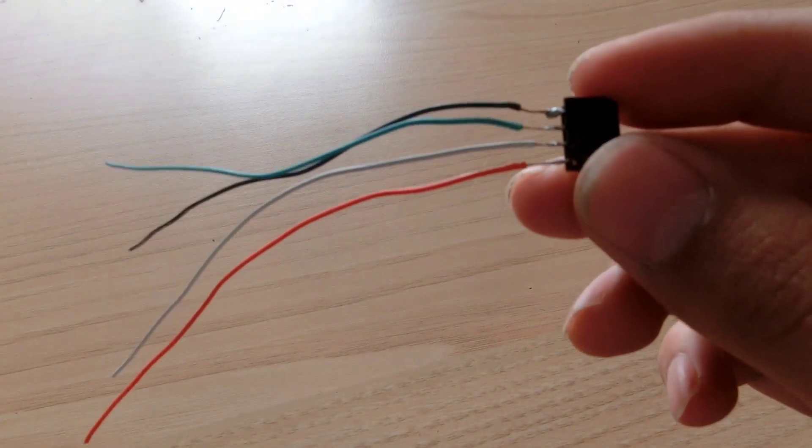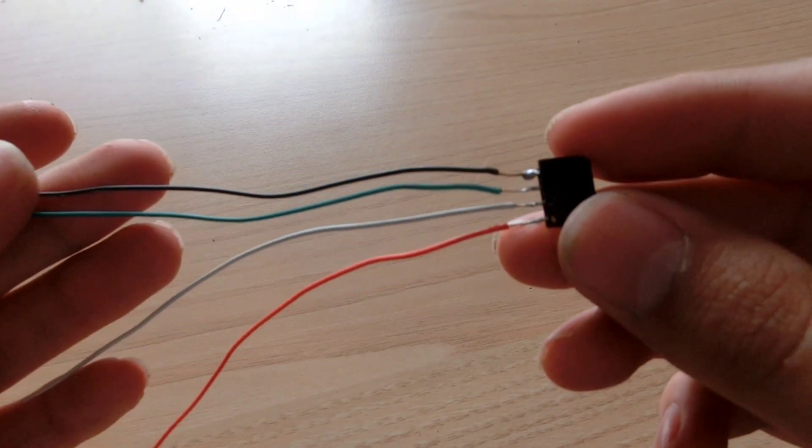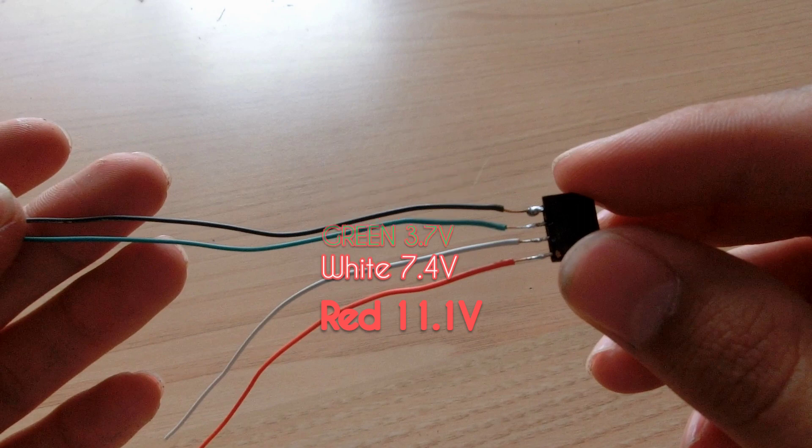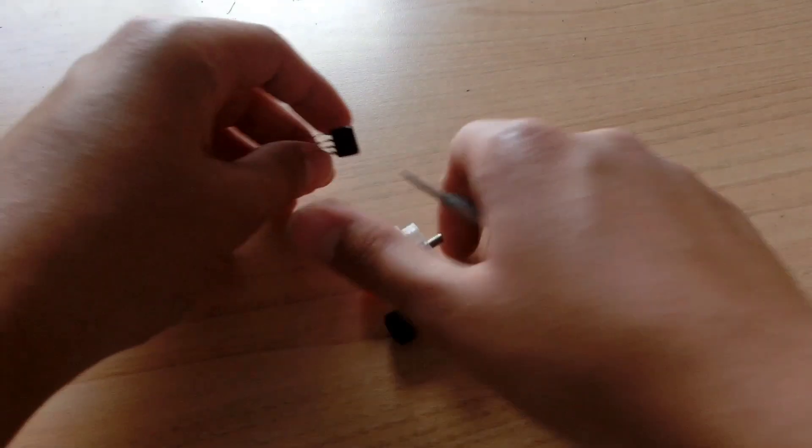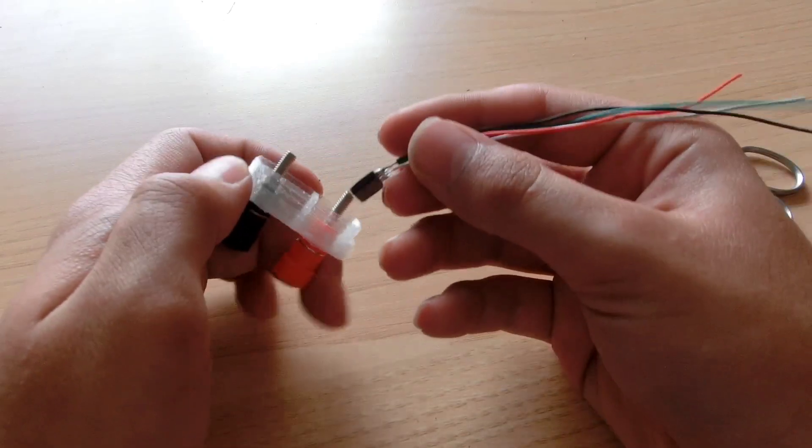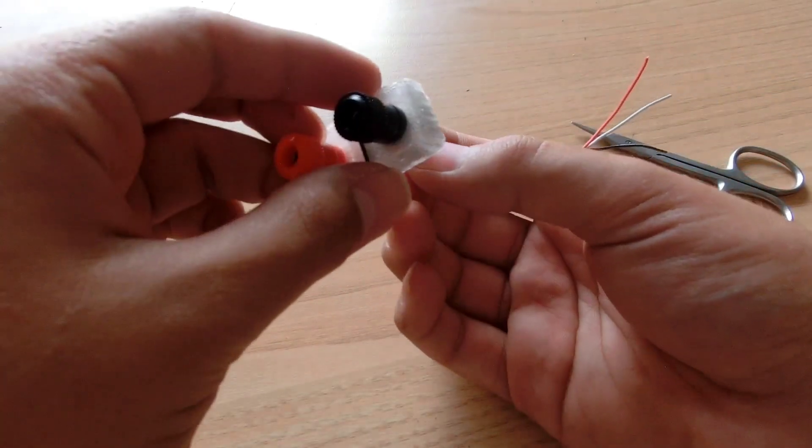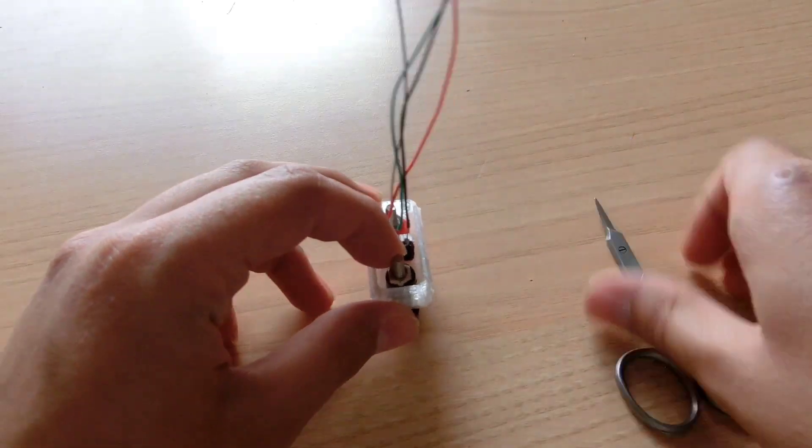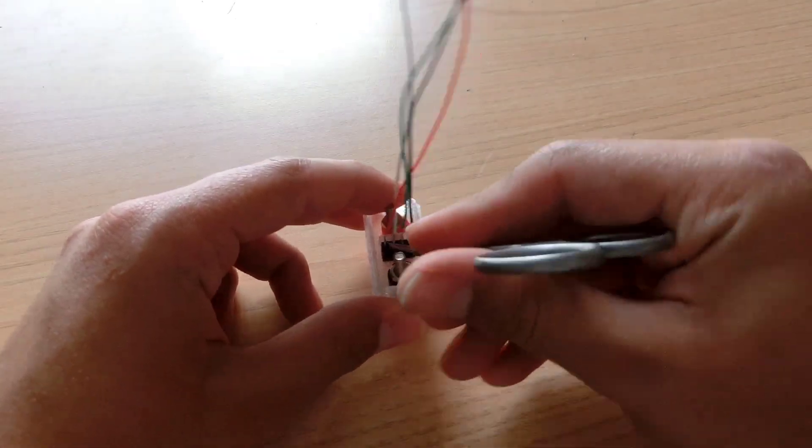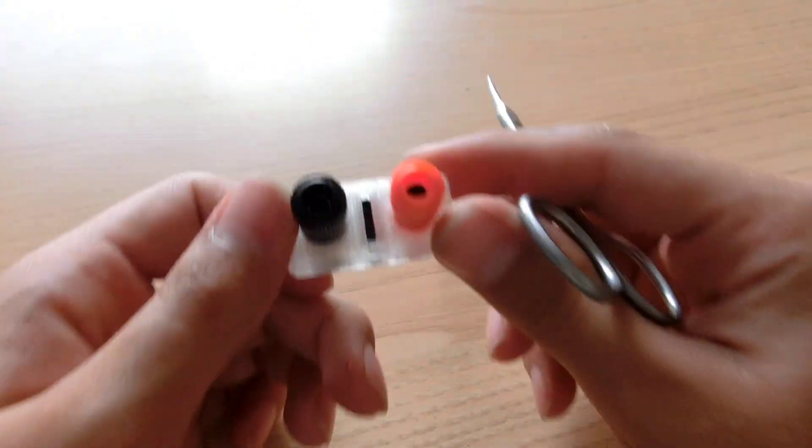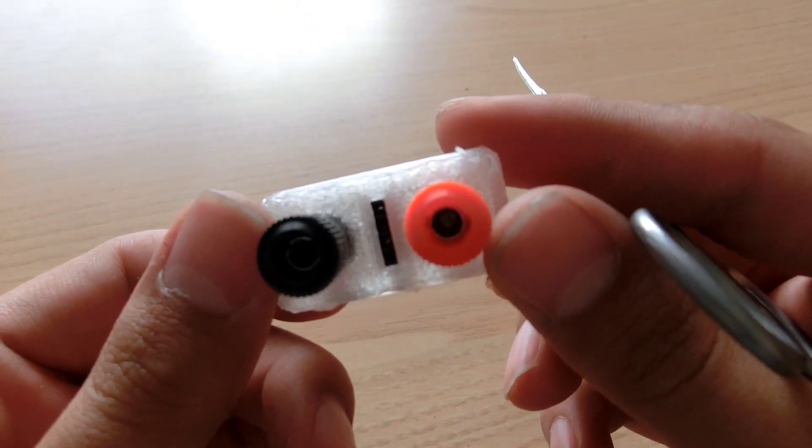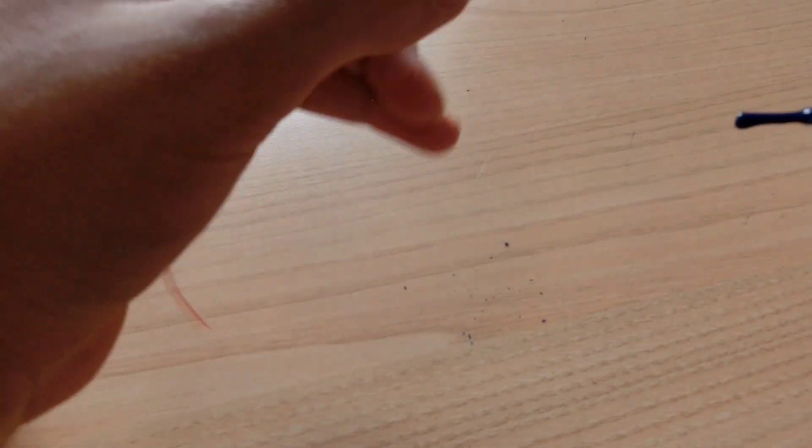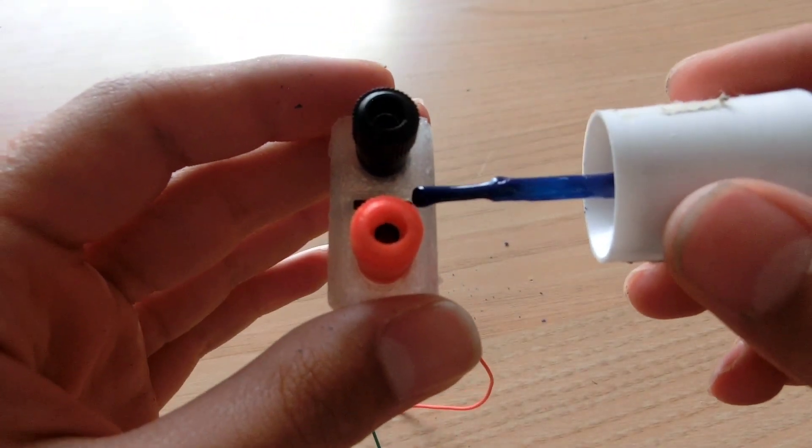I have soldered the wires in the following order: black for ground, green for 3.7V, white for 7.4V and red for 11.1V. After making the connections insert the connector back into the slot. The connector should be flush with the surface. Mark the ground of the connector with some nail polish. This will make charging the battery easier.